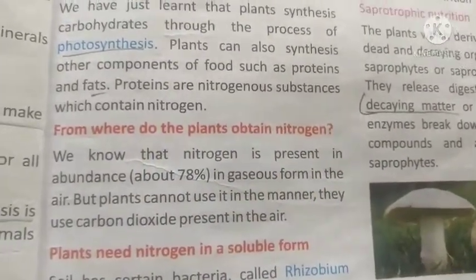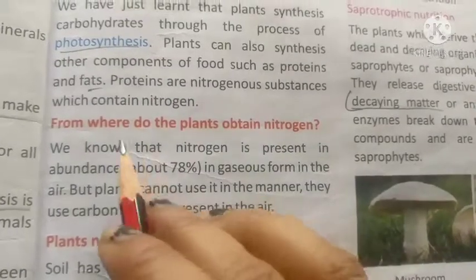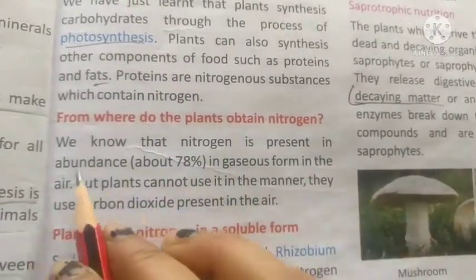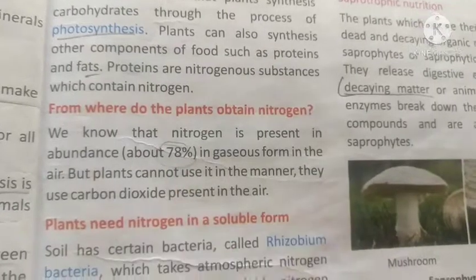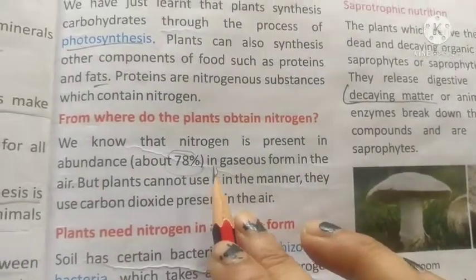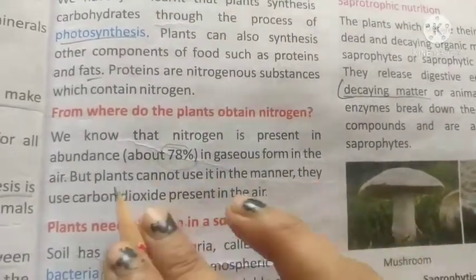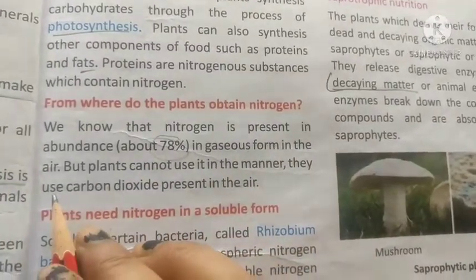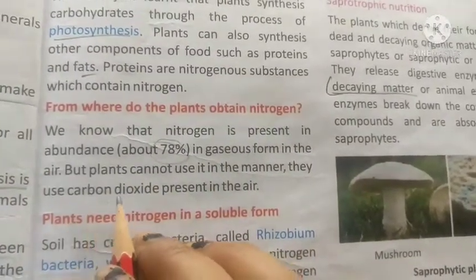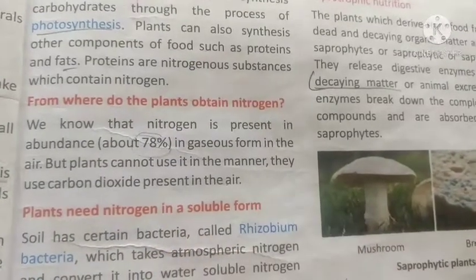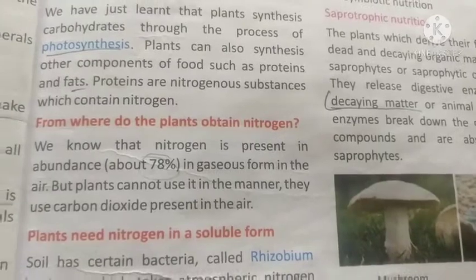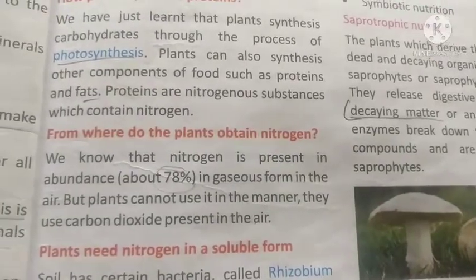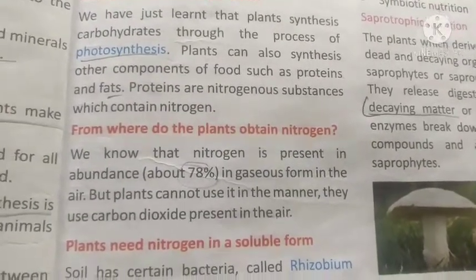From where do plants obtain nitrogen? We know that nitrogen is present in abundance — approximately 78% — in the atmosphere. However, plants cannot use nitrogen gas from the air directly the way they use carbon dioxide. They absorb nitrogen in a different manner.